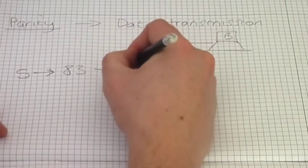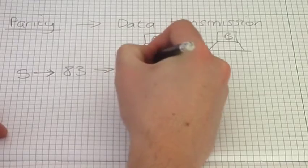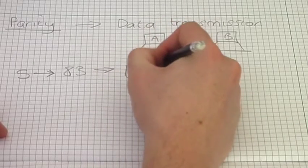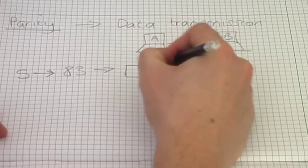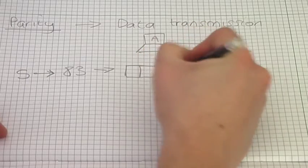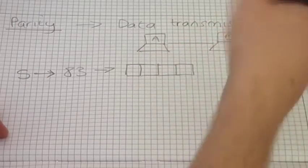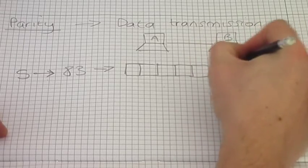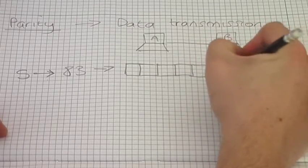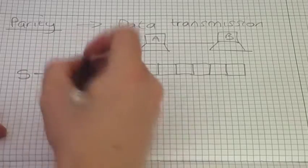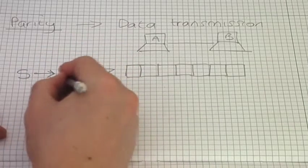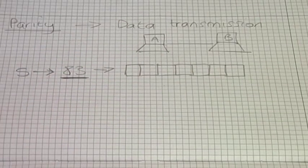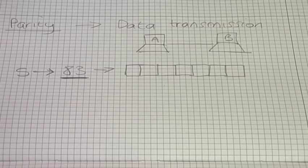I'm going to draw seven squares which we can use to put in our ASCII character. So we're going to make 83 — the decimal number 83. Let's just do a quick revision to see if we remember how to convert it into binary.